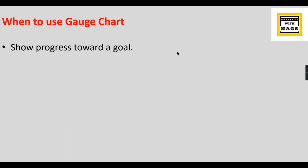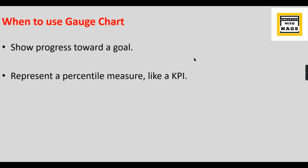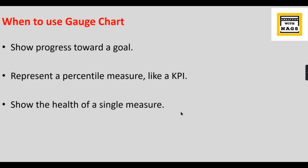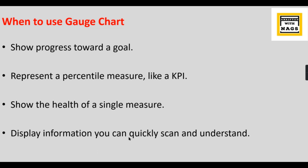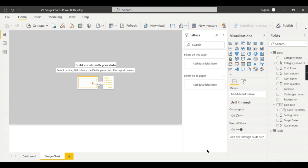When to use the Gauge chart: it's used to show progress towards a goal, represent a percentile measure like a KPI, and show the health of a single measure. As soon as you see this Gauge chart you can tell whether it's good, bad, or poor. It displays information you can quickly scan and understand — it indicates whether you can achieve the goal or if progress is on track.